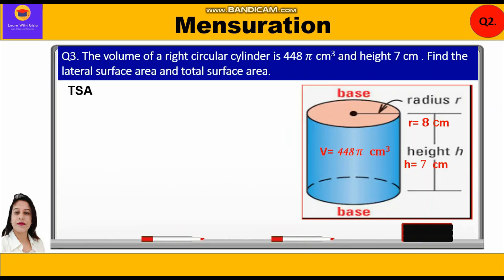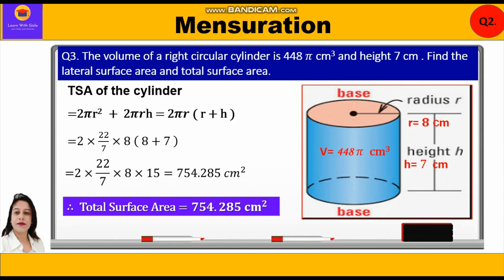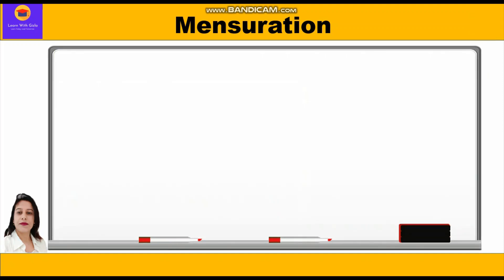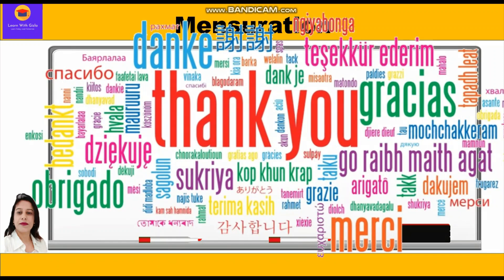Total surface area of the cylinder = 2πr² + 2πrh = 2πr(r + h). Substituting: 2 × (22/7) × 8 × (8 + 7) = 2 × (22/7) × 8 × 15 = 754.28 cm². So the total surface area is approximately 754.28 cm². This is how we have solved three very important questions related to surface area and volume of a cylinder. Hope you have understood. Thank you everyone.